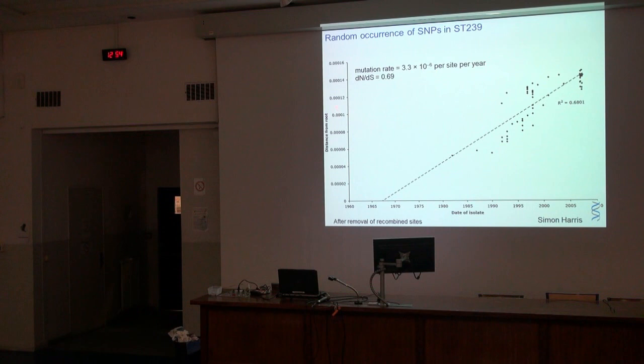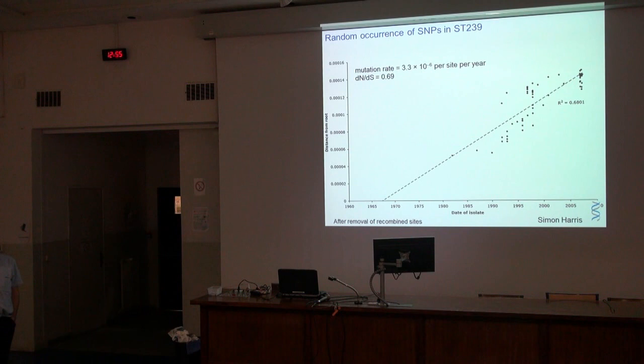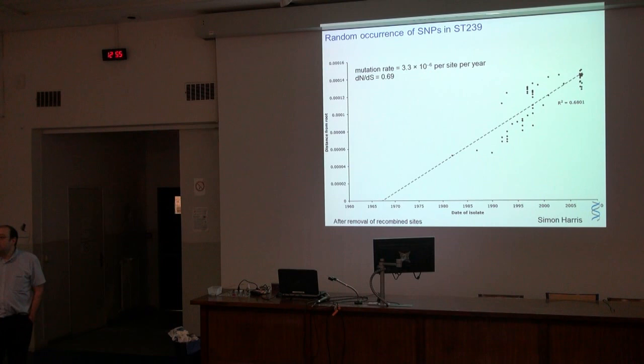So we get a nice straight line for acquisition of SNPs versus dates of isolation, giving us a mutation rate of around 3×10⁻⁶ per site per year, which is about 6 mutations per genome per year. The previous estimates of mutation rates in bacteria were mostly taken from a comparison of E. coli and Salmonella, estimated to have separated maybe 100–140 million years ago. Looking at synonymous changes at the third codon position, the mutation rate estimated that way was around 10⁻⁹ per site per year — about 1,000 times slower.